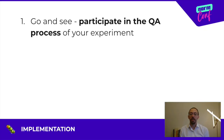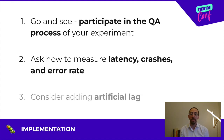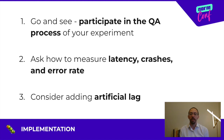Here's what you should do: participate in QA. Go and see the experiment yourself before you share it with users. Ask your engineering team about latency, crashes, and error rates. Find out if you can measure these in the context of your experiment. If there's an unavoidable lag in loading your treatment, consider applying this same lag to your control. That way you have a more fair comparison of what you're trying to test.